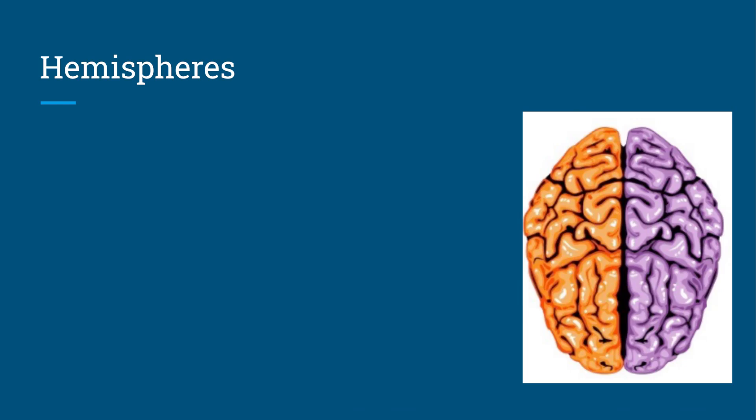Now I mentioned the word hemispheres. This is just to show you what they look like in a picture. Your brain is basically divided into two halves, and each hemisphere has more or less the exact same structure. It's just there to show you an image of what the hemispheres look like.